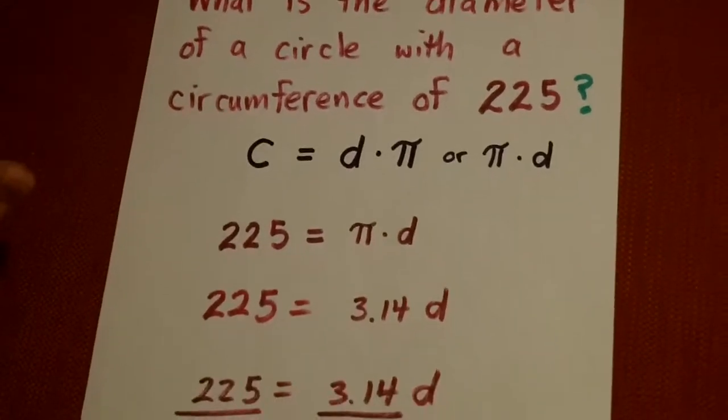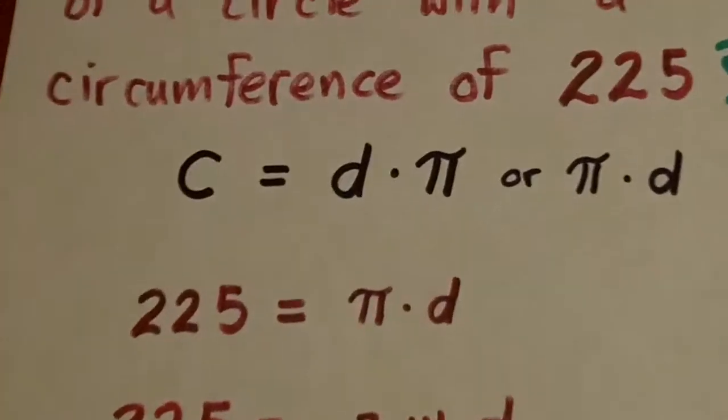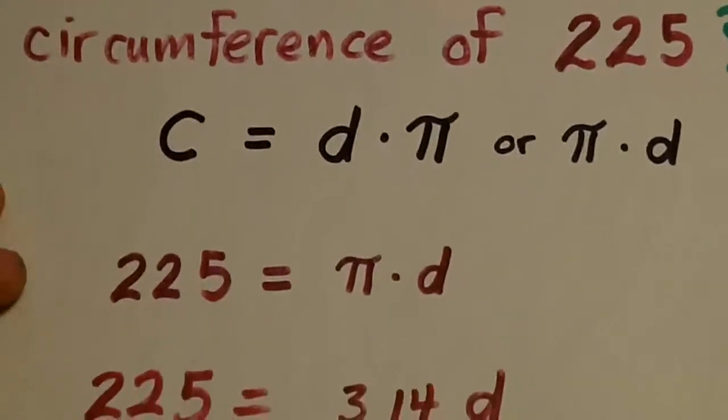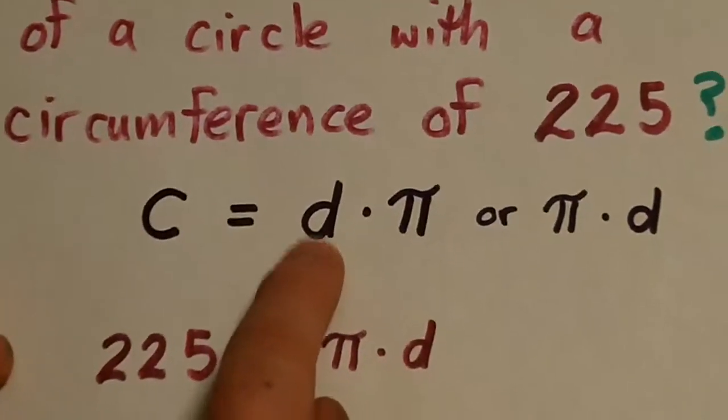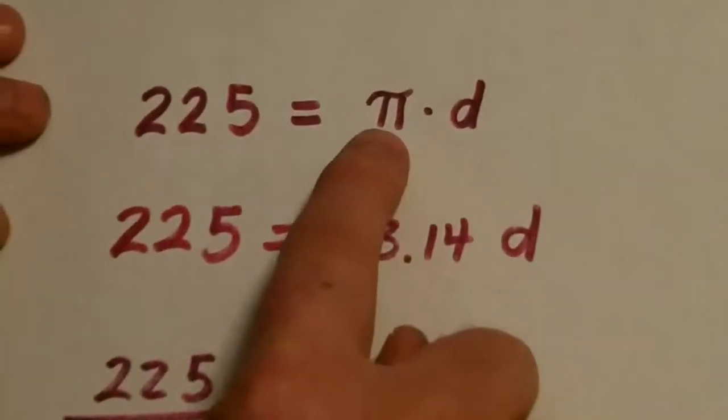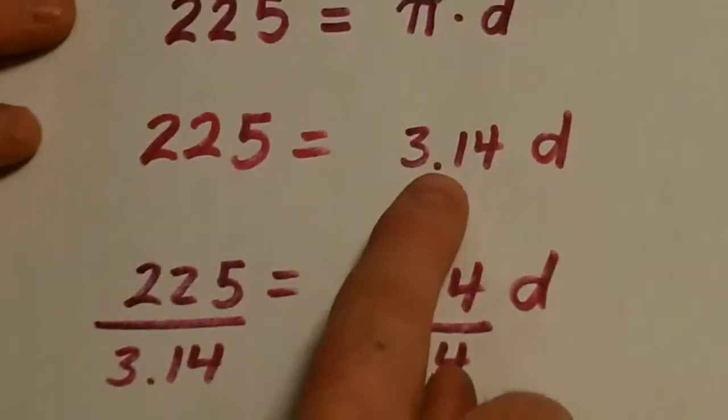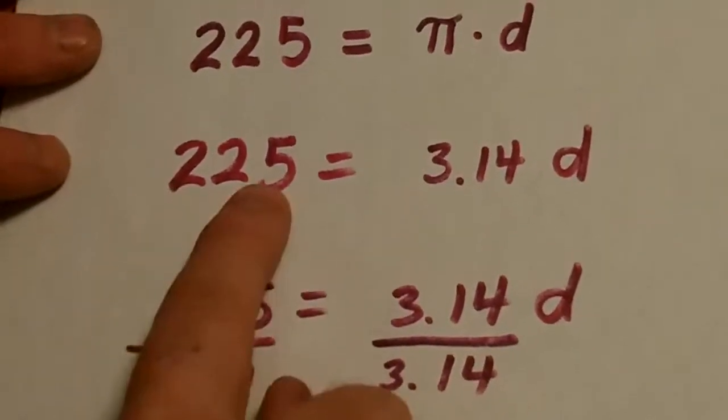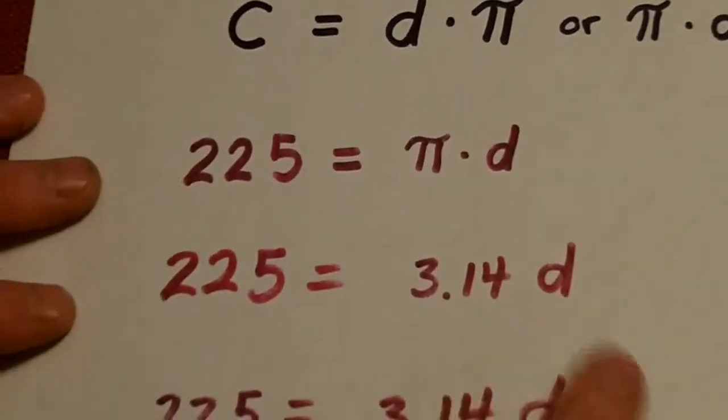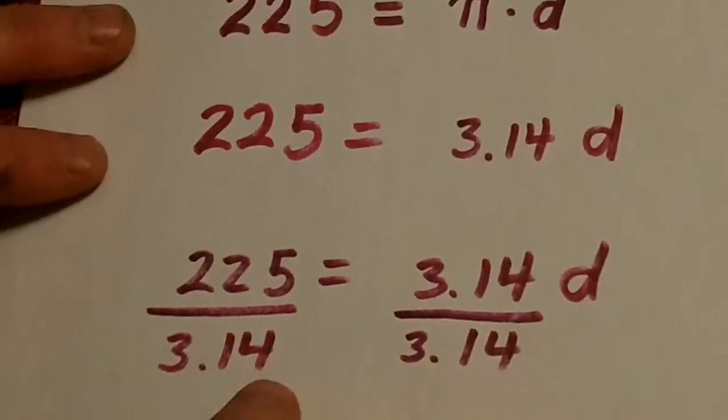Now, what we do is, we basically solve for x. Remember back, way back at the start of the year, we would solve for x in equations, where x was the variable. Well, diameter, we don't know that, so d is our variable. Now, we know our circumference is 225, and we know that pi, we can assign that as a 3.14. So our circumference is equal to 3.14 times d, which is our variable. Now, to get the d by itself, we divide by 3.14 on both sides.